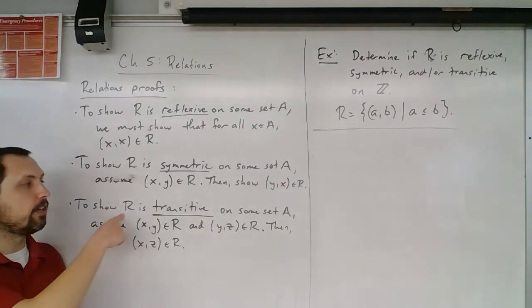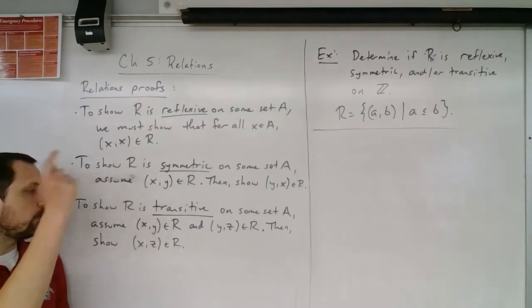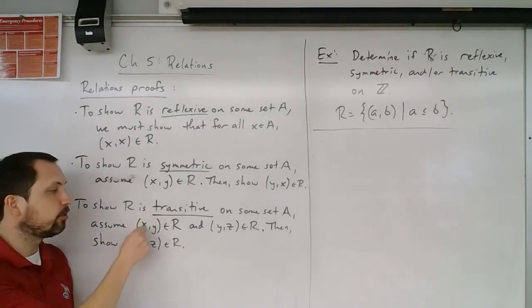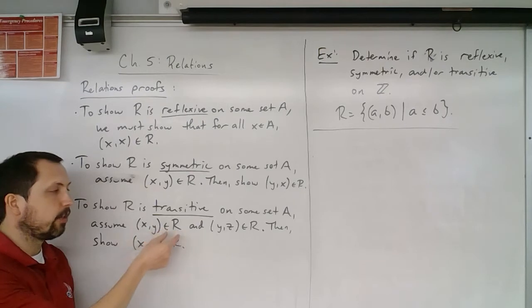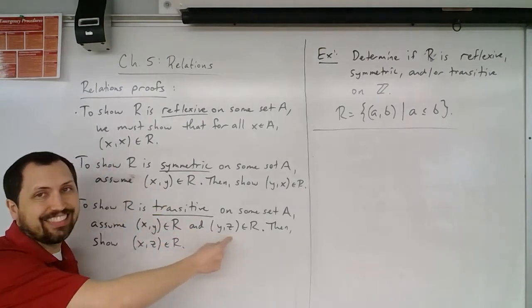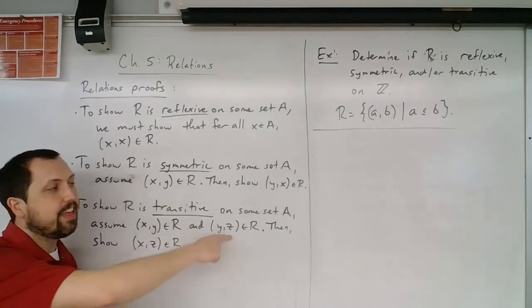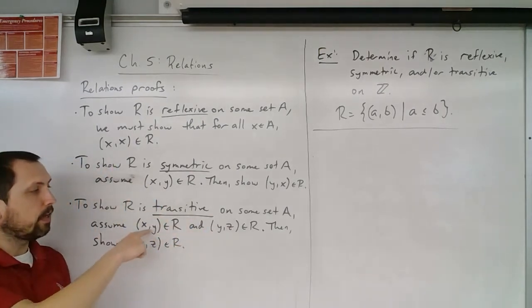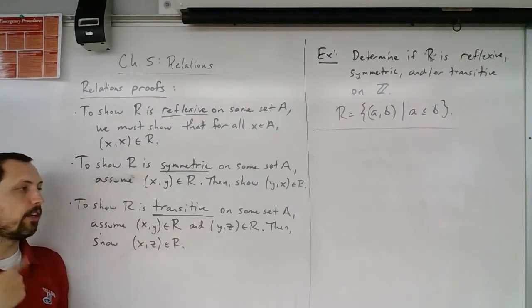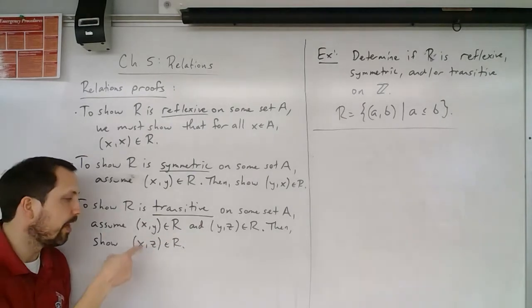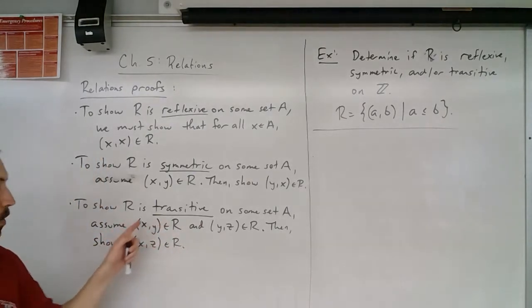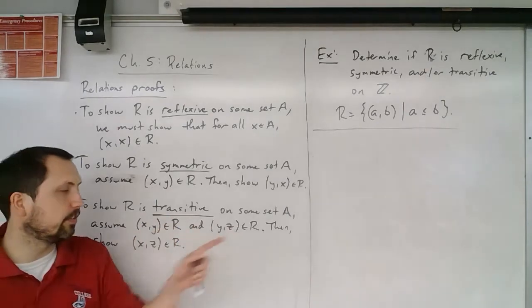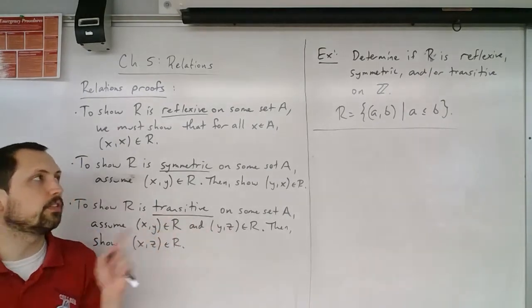Similarly, to show that R is transitive, we assume that x is related to y — so (x, y) is in R — and that y is related to z. Once we make both of these assumptions, we want to show that x is related to z. So we have x going to y, y going to z — does x go to z?